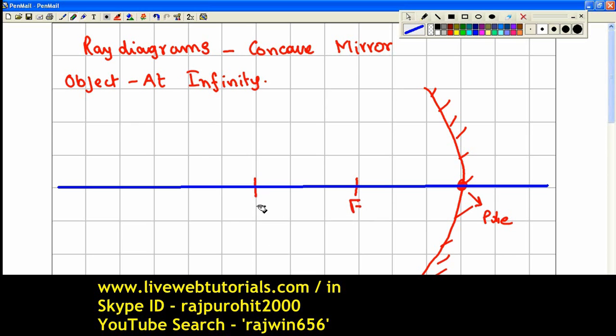This point, the first one, is the focus and this is going to be your center of curvature. So C is the point from where you have drawn this curve.